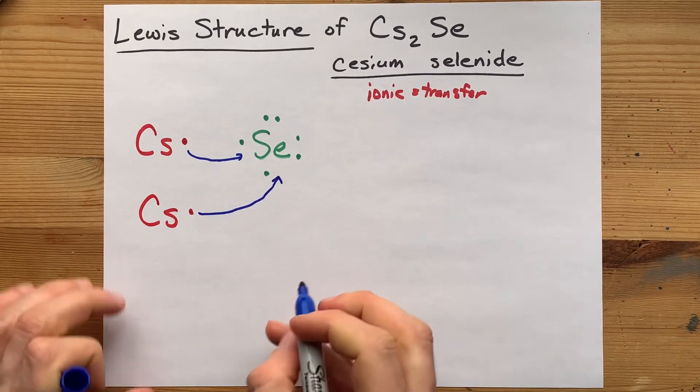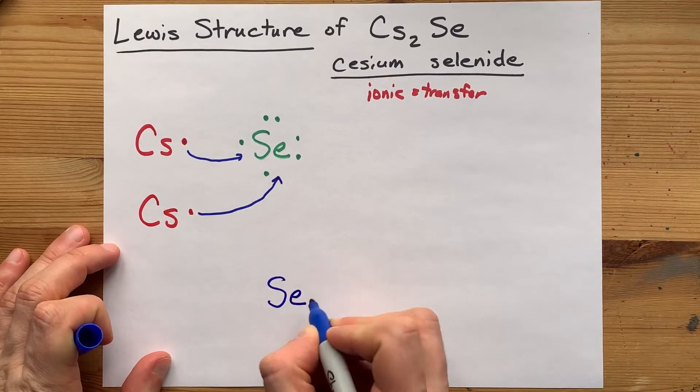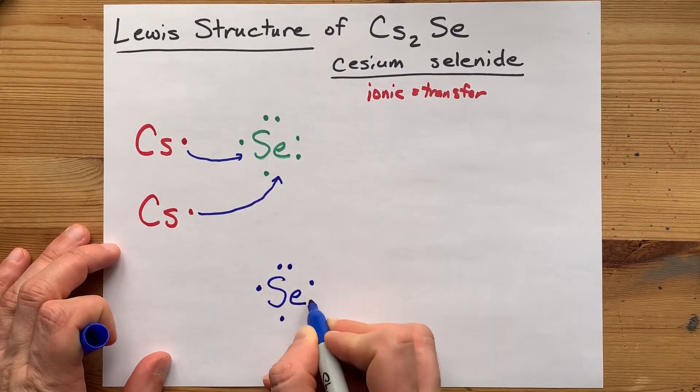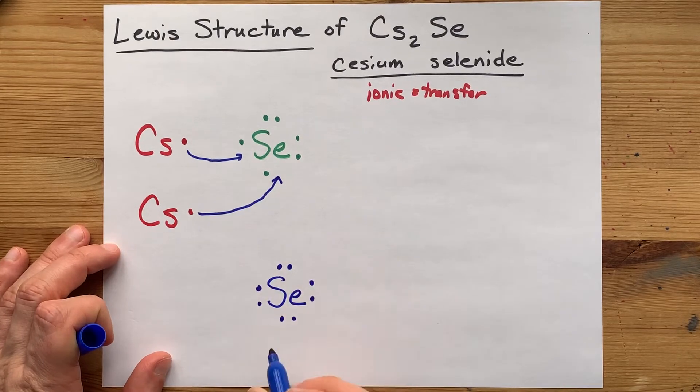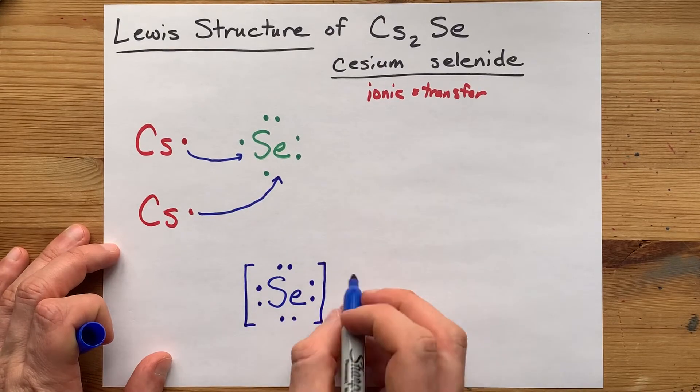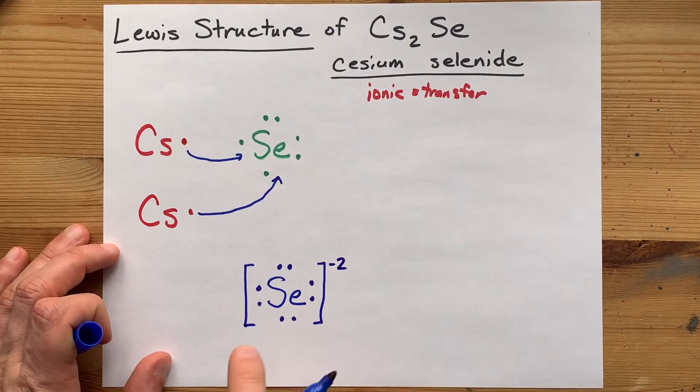So, in the end, we have a selenium that brought six electrons and now has two extra. That makes eight electrons total. It's two more than it brought originally, so it has a minus two charge.